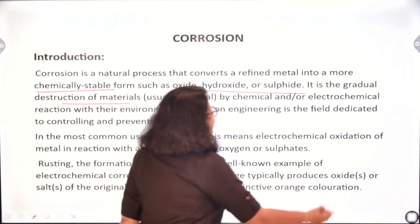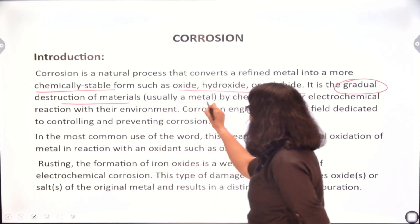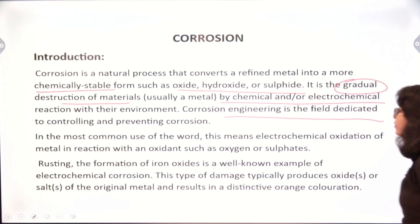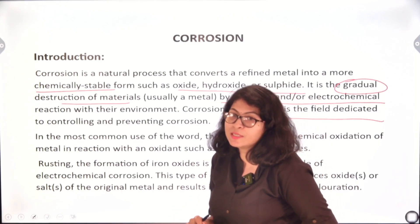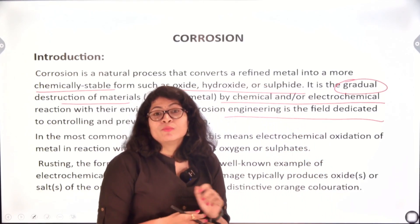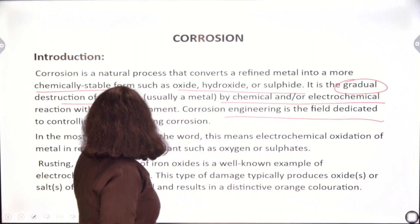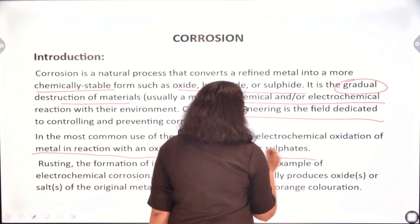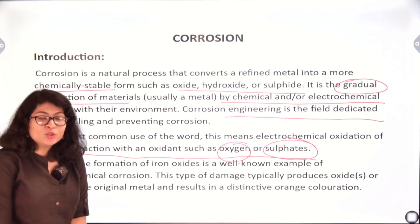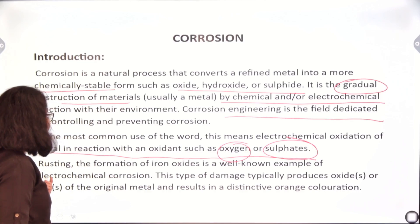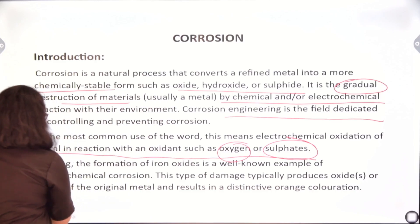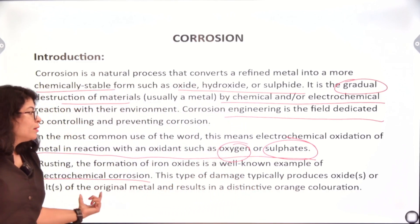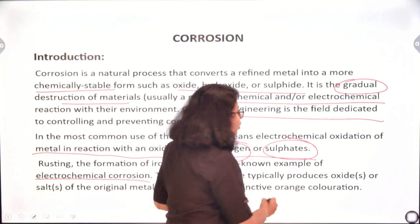Corrosion is a very gradual, slow process of destruction of metals usually by chemical or electrochemical reactions with the environment. Corrosion engineering is the field dedicated to controlling and preventing corrosion. In the most common use of the word, this means electrochemical oxidation of metal in reaction with an oxidant such as oxygen or sulphates — basically, it is the conversion of the metal to its oxides or sulphides. Rusting, the phenomenon of iron oxide, is a well-known example of electrochemical corrosion, typically producing a distinctive reddish-brown coloration.